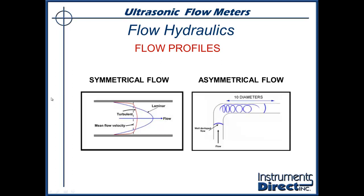If you have an elbow, 10 pipe diameters, put your sensor there, and have another 5 pipe diameters after the next elbow, you would have a symmetrical flow profile if your flow rate is around 10 feet per second. Greater than 10 feet per second, you need additional straight run. Less than 10 feet per second, you can get by with less. You need an unobstructed line — no probes or valves. If you have a butterfly valve or a pump, you might want additional straight run of pipe.